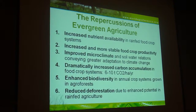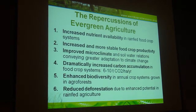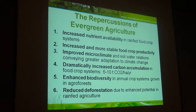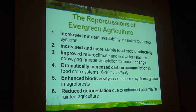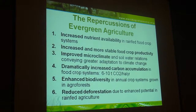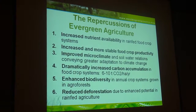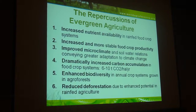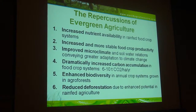So in summary, what are the repercussions of evergreen agriculture? We can look for utility of these systems in increasing the nutrient availability in grain-fed systems — increasing soil organic matter as well as the nutrient content of soils — increased and more stable food crop production, improved microclimate (which happens to be the major effect in the Sahelian zone), protection from the harmattan, and dramatically increased carbon accumulation. Our estimates are from 6 to 10 tons of carbon dioxide equivalent per hectare per year, compared to generally 0.1 to 0.4 tons per hectare under the best conditions for conservation agriculture.